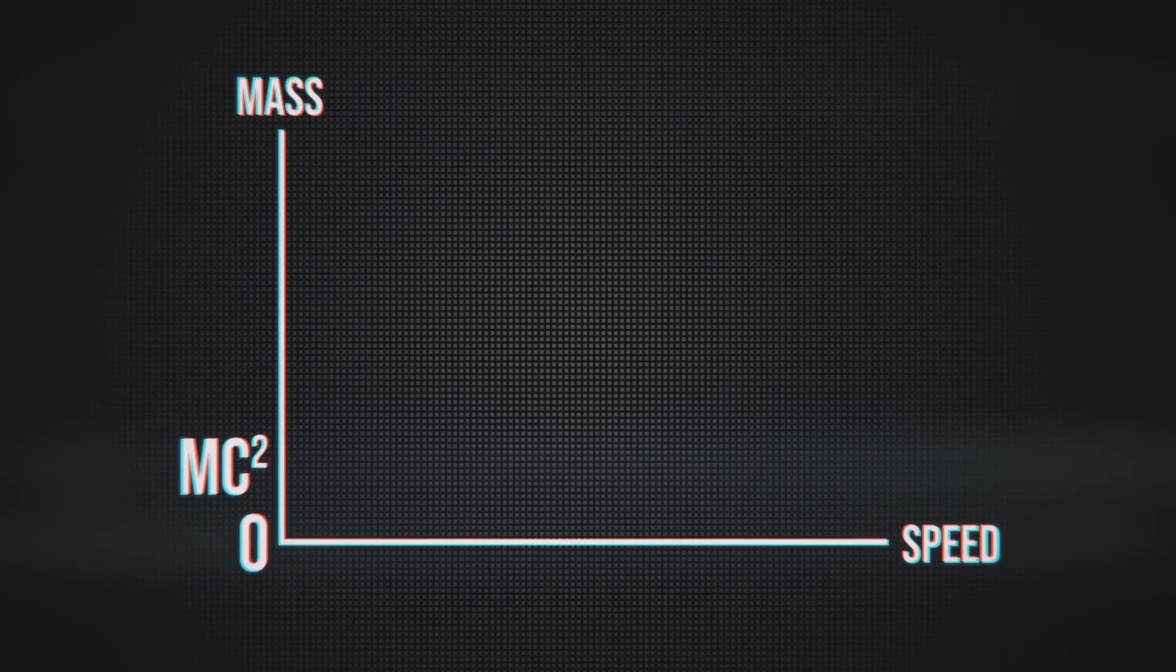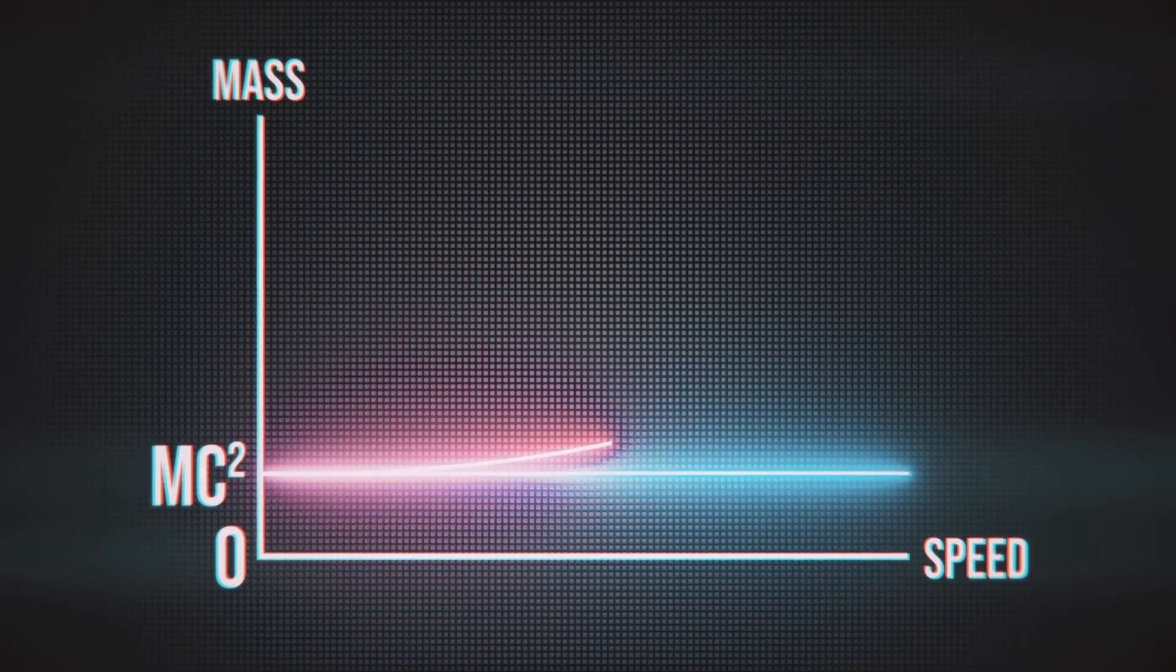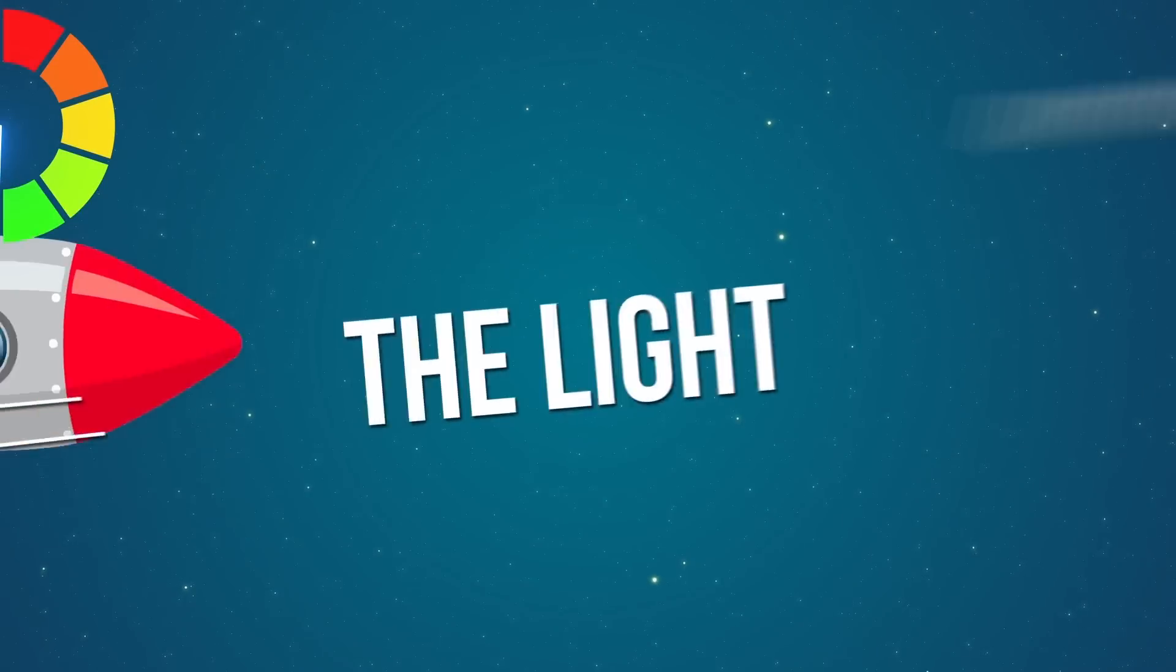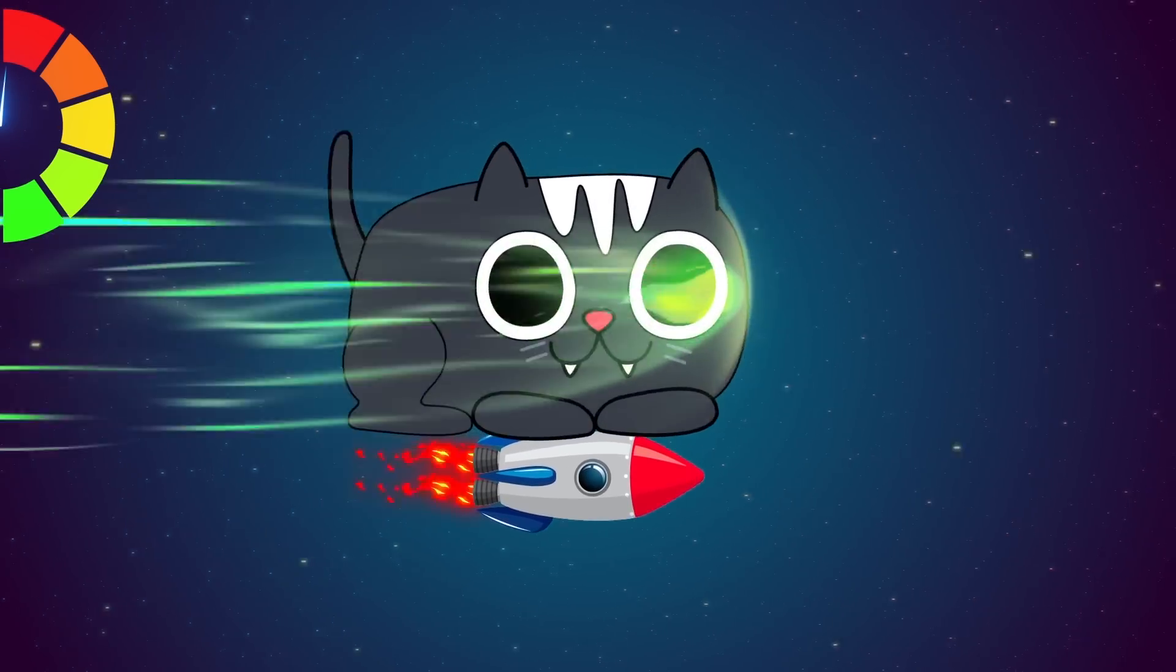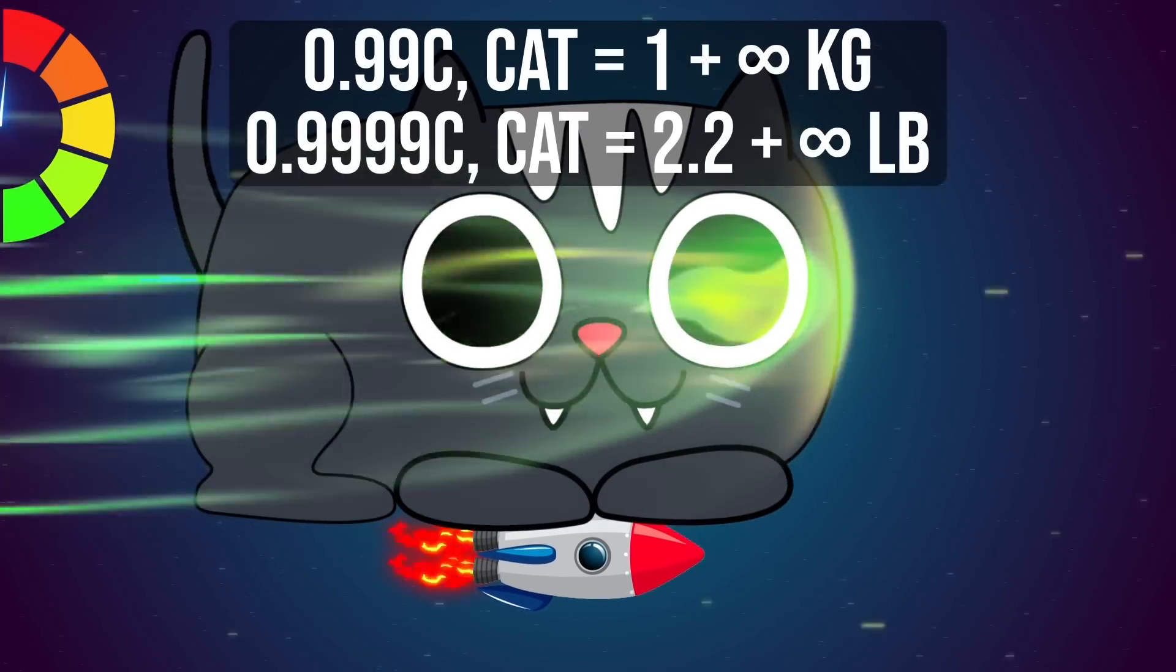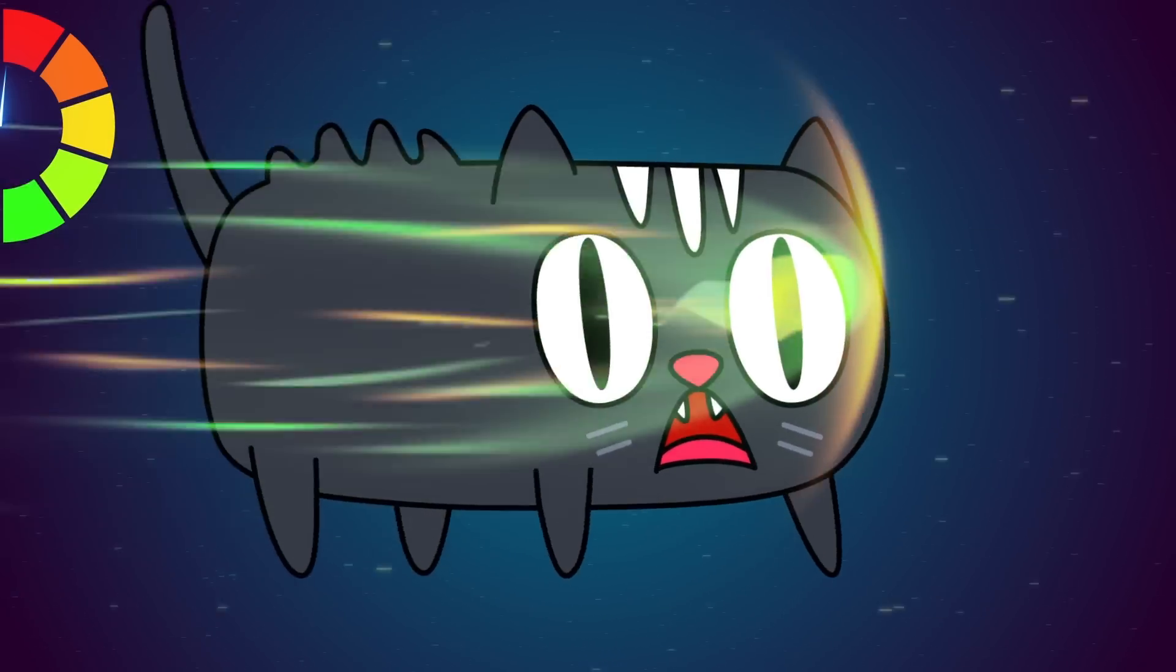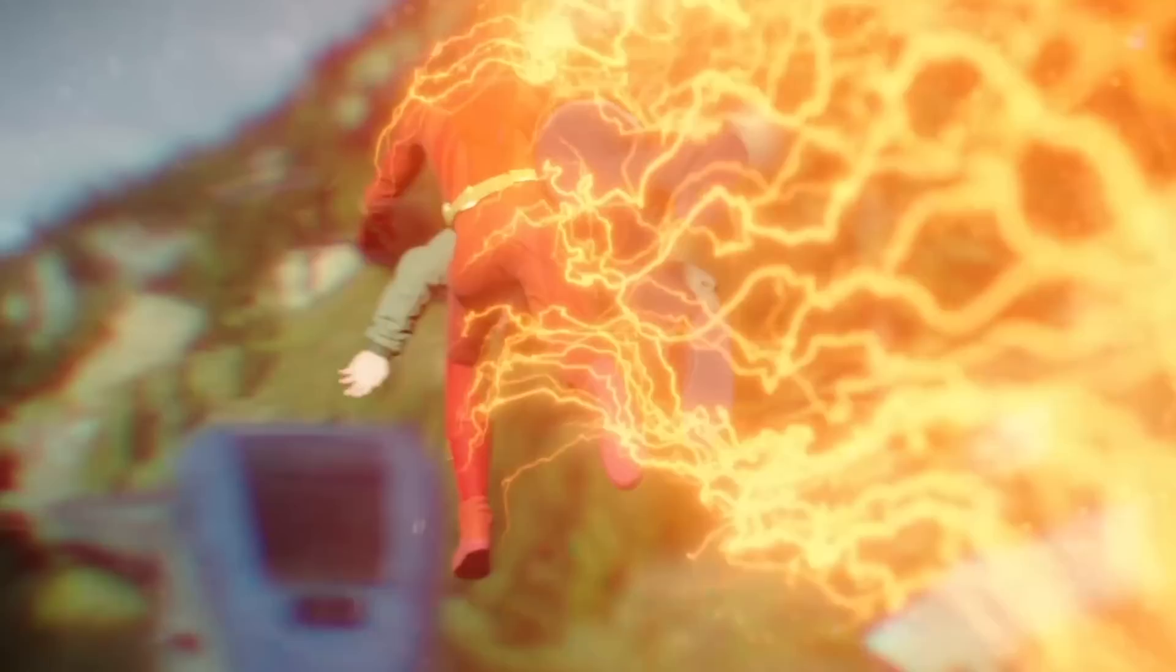Einstein told us that the faster an object moves, the harder it is to actually move. This mass is called relativistic, and it derives from the increasing energy that the kitten produces while accelerating. And the closer a body gets to the speed of light, the harder it is to go even faster. When it nearly reaches the light barrier, the kitty's mass will start approaching infinity. It's impossible to build a rocket that won't fall to pieces carrying even one little baby like that on board. Then why doesn't Flash turn into Jabba while running, but stays a fit and robust athlete? There can be only one scientific explanation.